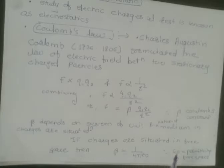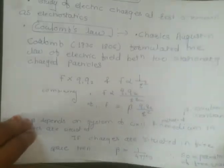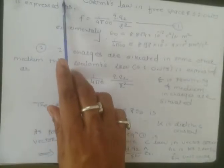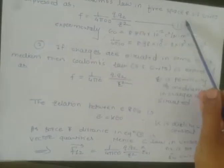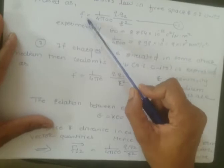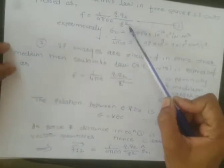If the charges are situated in free space, then β can be given as 1/(4πε₀), where ε₀ is the permittivity of free space. Coulomb's law in free space expressed in SI units is: F = (1/4πε₀) · q1·q2 / r².